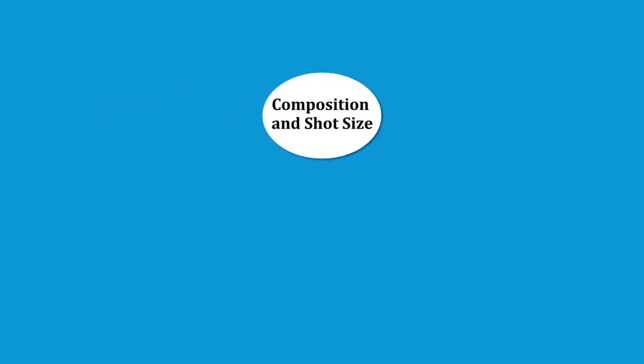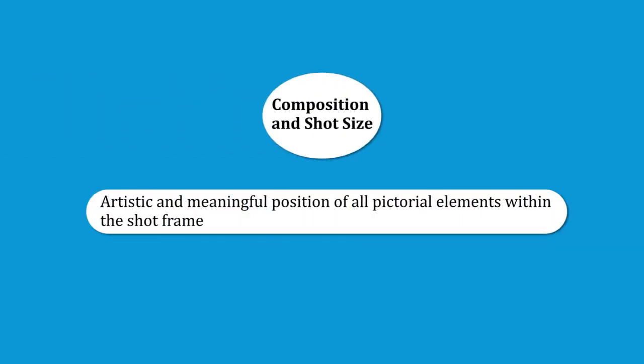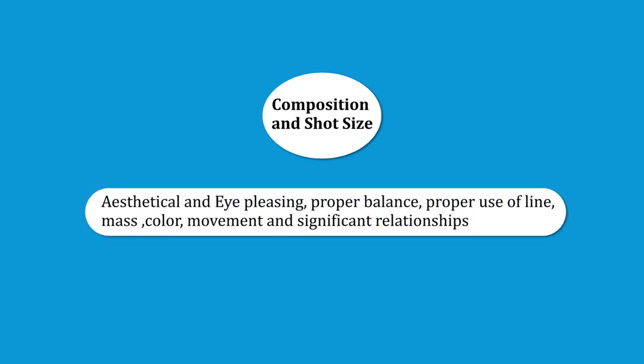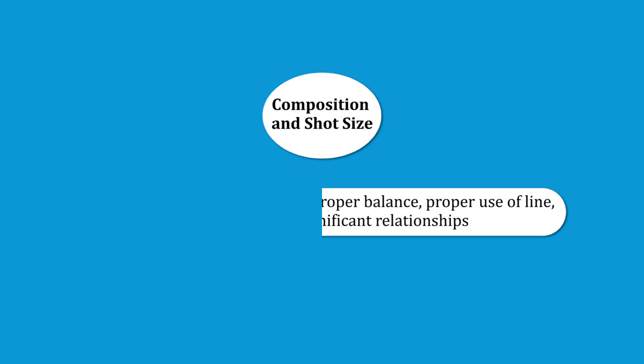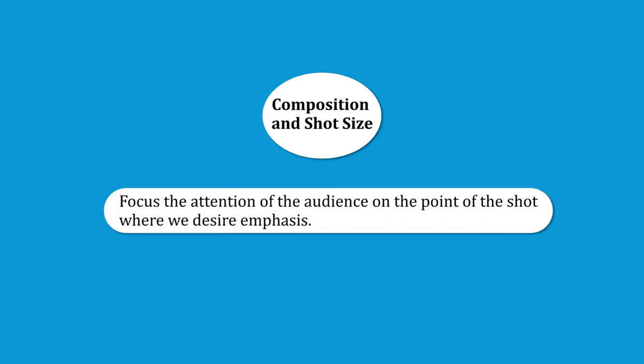The composition of the shot should be artistic — a meaningful position of all pictorial elements placed within the shot frame. Nothing should be out of frame or look disorganized. It should be aesthetically pleasing with proper balance, proper use of line, and considered movement — it is like interior designing. The focus of the audience's attention should be on the main point: if a presenter is talking, the presenter should be in focus; whereas if a process is being shown, the process should be the focus.